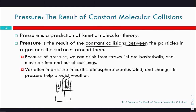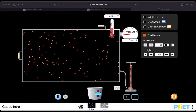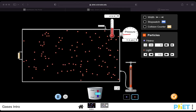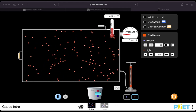Pressure is a prediction of kinetic molecular theory—it's the result of constant collisions between gas particles and the surfaces around them. Because of this, we can drink from straws, inflate basketballs, or move air in and out of our lungs. Variations in pressure cause wind, and changes in pressure can help predict weather. The pressure inside this simulation container comes from those particles colliding with the walls.